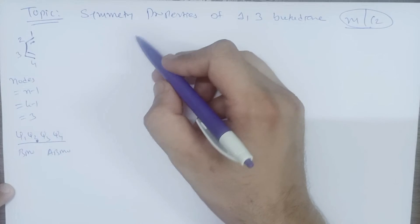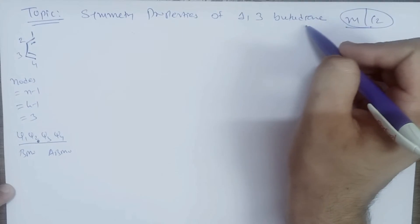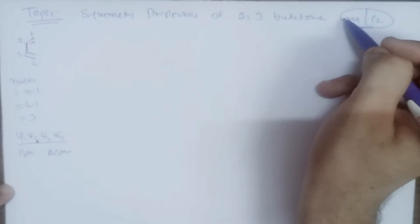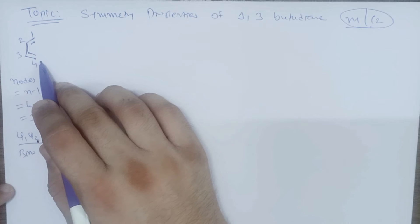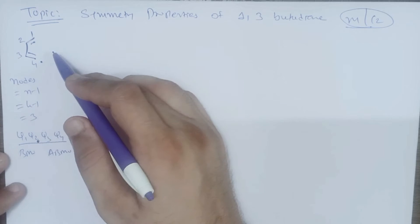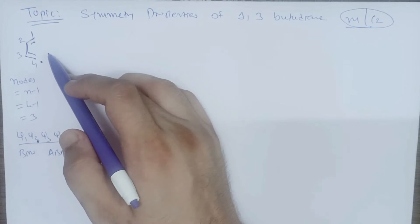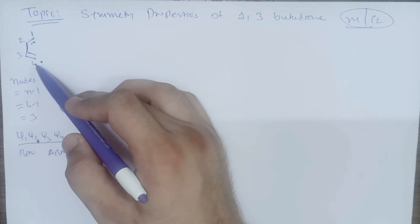So today we are going to learn about the symmetry properties of 1,3-butadiene. We can start with the structure of 1,3-butadiene, that is carbons 1, 2, 3, 4.